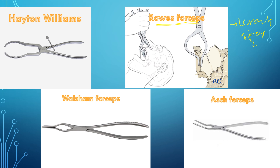In Rowe's forceps, the flatter wing is inserted into the nasal cavity while the curved end goes into the mouth and holds the maxilla from the palatal part. Hayton Williams forceps are also used for maxillary disimpaction but the beak is larger and the shape is symmetrical — both blades are of the same shape. For nasal fracture reduction, Volsellum forceps or Ash forceps are used, both for closed reduction of nasal bones.